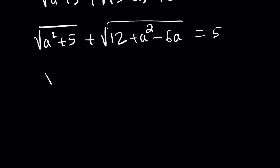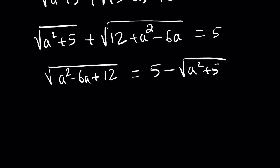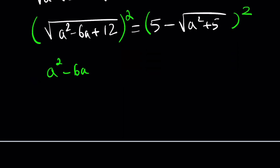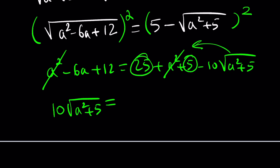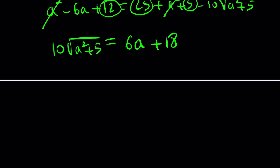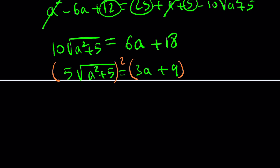Isolating the larger radical on one side and moving the square root of a² plus 5 to the other, then squaring both sides, gives a² minus 6a plus 12 equals 25 plus (a² + 5) minus 10 times the square root of a² plus 5. Cancelling a², then isolating the radical: 10 times sqrt(a² + 5) equals 6a plus 18. Dividing by 2: 5 times the square root of a² plus 5 equals 3a plus 9.